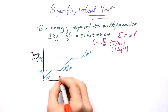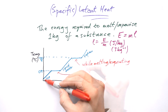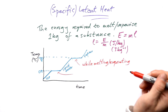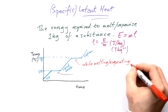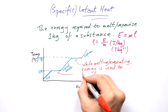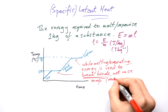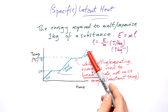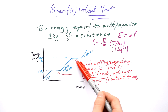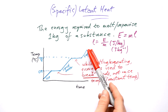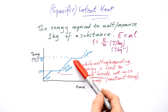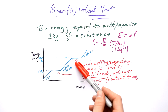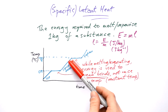Why does the temperature stay constant during melting and vaporization? While heating ice, the energy raises the temperature. But before it can increase temperature further, the energy first has to break bonds to melt or vaporize the substance. So while melting or evaporating, energy is used to break bonds rather than raise temperature, giving a constant temperature plateau. When cooling water vapor back down, the same happens in reverse: at 100 degrees there's a flat line while condensation occurs because bonds are remade and energy is released.